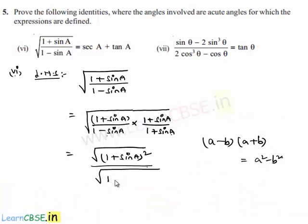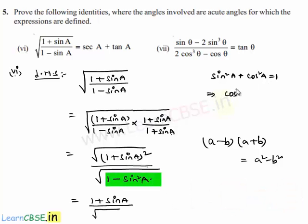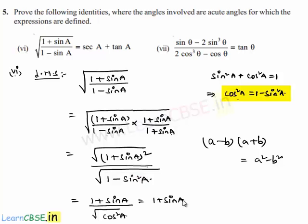So the numerator, square root of (1 plus sin A) whole square, is nothing but 1 plus sin A, divided by the square root of the denominator. Using the identity sin squared A plus cos squared A equals 1, we get 1 minus sin squared A equals cos squared A. So in the denominator we get square root of cos squared A.